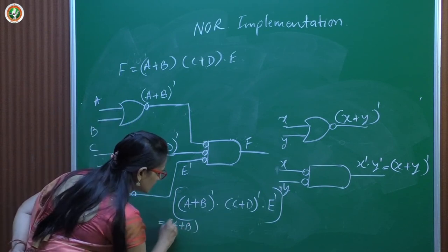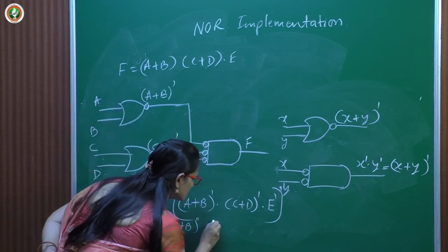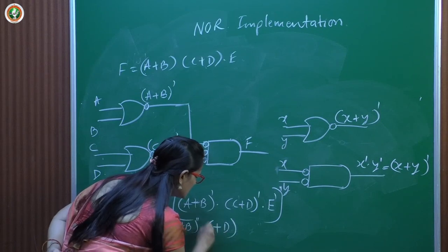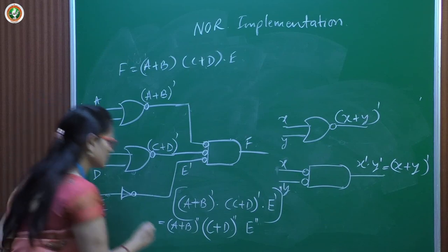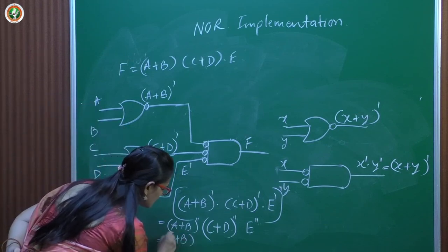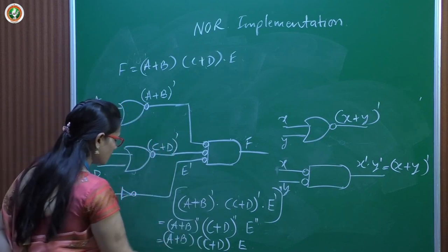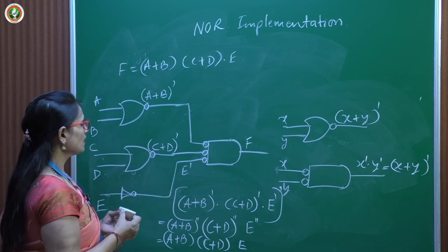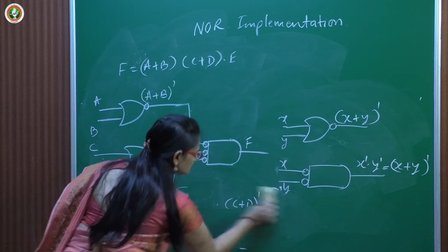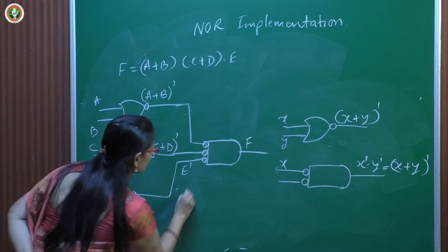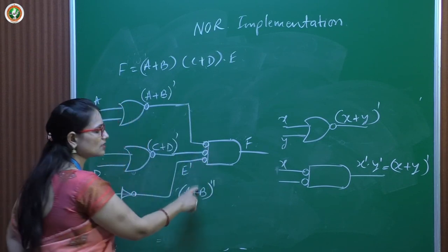Verifying: the output simplifies to (A+B)'' · (C+D)'' · E'' = (A+B)(C+D)E — the desired output. The NOR-NOR implementation is confirmed correct.